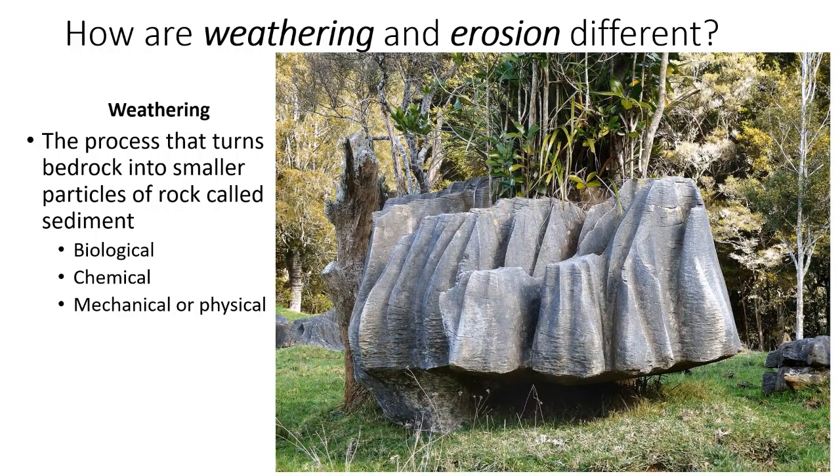Chemical weathering refers to the disintegration of rocks due to a chemical reaction. For example, rainwater can combine with carbon dioxide in the atmosphere, making it slightly acidic. That weakly acidic rain then eats away at rocks like this limestone that we see in the picture. Many caves are formed by chemical weathering.